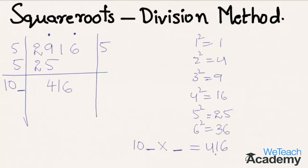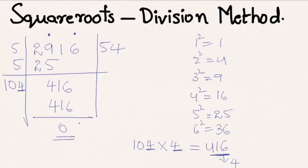Let us see the last two digits of 416. We get 16, which is a perfect square of 4. Let us check: 104 times 4, and we get the result as 416. We can see that 104 times 4 is 416, and we get remainder 0. Hence, 54 is the square root of 2916.